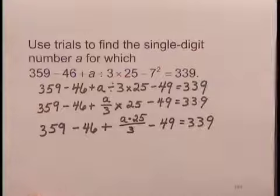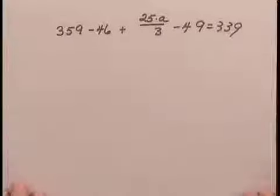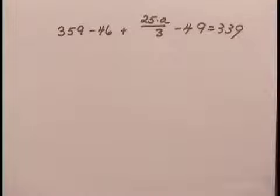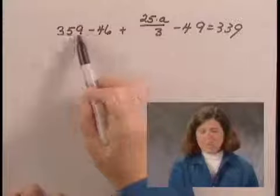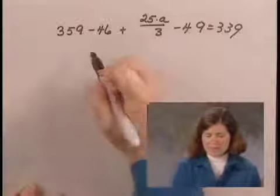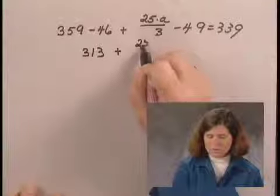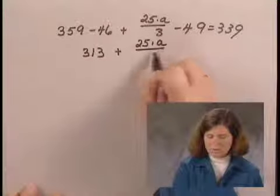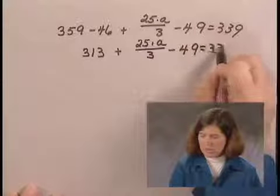Now, I'm going to continue this by performing additions and subtractions in order from left to right. I will first perform the subtraction 359 minus 46. That is 313. Then I have plus 25 times A divided by 3 minus 49 equals 339.